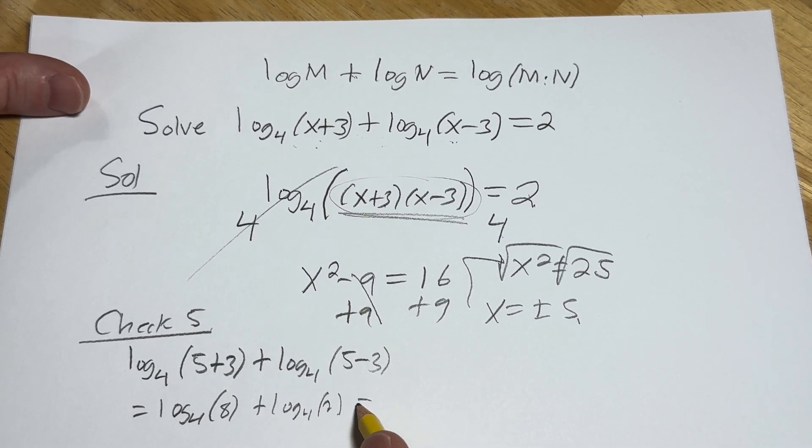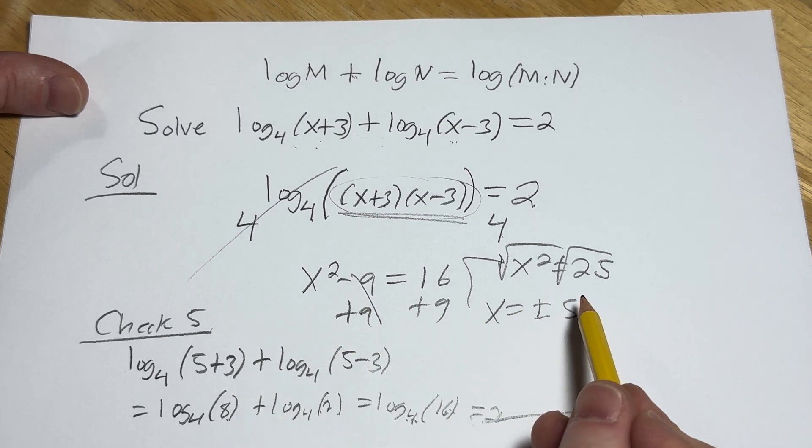It's going to be log base 4 of 8 plus log base 4 of 2. Again, we use the product rule here. This is log base 4. 8 times 2 is 16. 4 to what power is 16? 2. 4 squared equals 16. Boom, it checks. 5 is one of our answers.